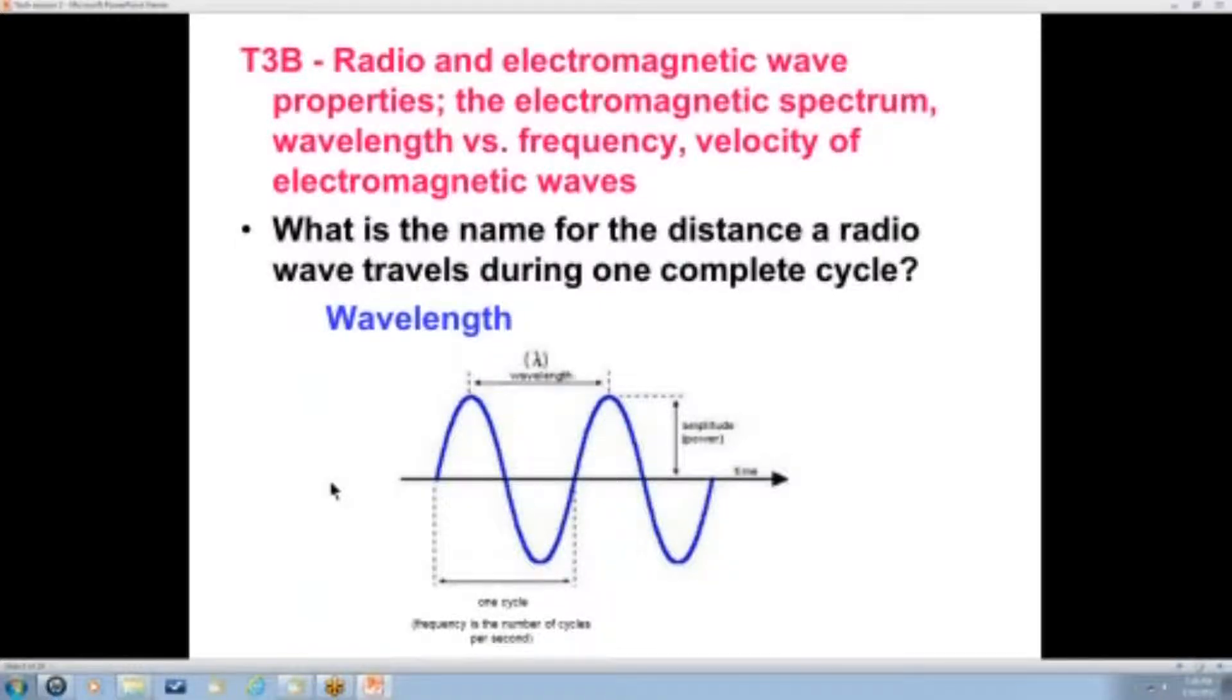Any questions on T3A before we move along? Nothing? Okay. Radio and electromagnetic wave properties, the electromagnetic spectrum, wavelength versus frequency, velocity of electromagnetic waves. What's the name for the distance a radio wave travels during one complete cycle? It's called the wavelength.